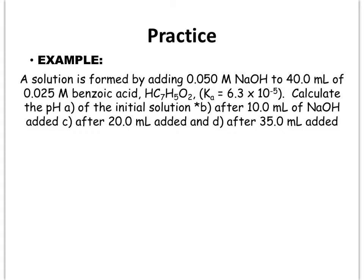So let's do an example. As you can see from this particular problem, we are adding some sodium hydroxide to 40 milliliters of benzoic acid. Benzoic acid is a weak acid, so we have the benzoic acid in the flask and the sodium hydroxide in the burette being added to it. This is a weak acid being titrated with a strong base type problem.